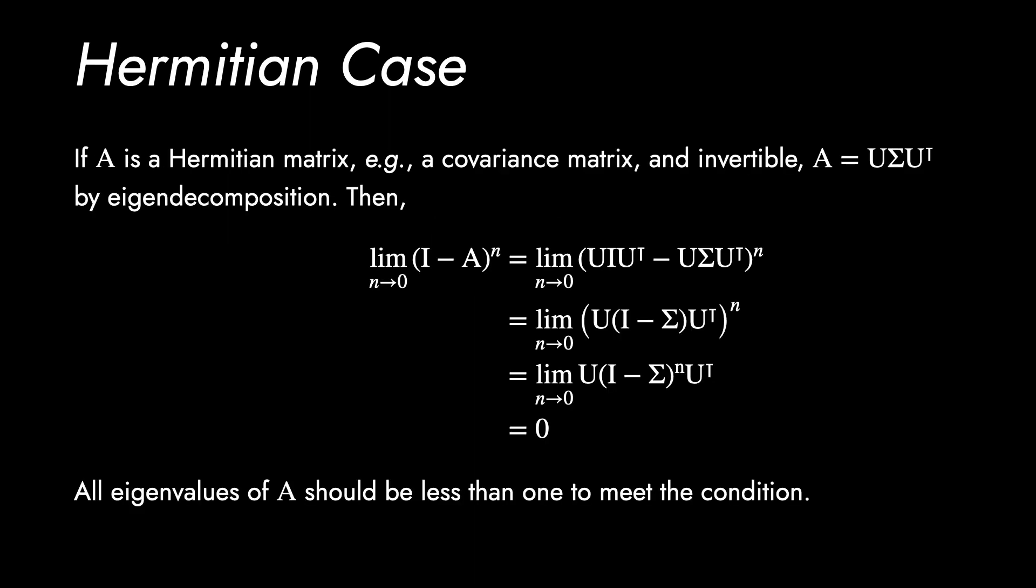Let's check the condition with the Hermitian matrix, for instance, since we usually meet this case in practice, for example, as a covariance matrix. To comply with the condition, the positive eigenvalues of the matrix A should be less than 1. Notice that if A is invertible and Hermitian, all eigenvalues are positive.